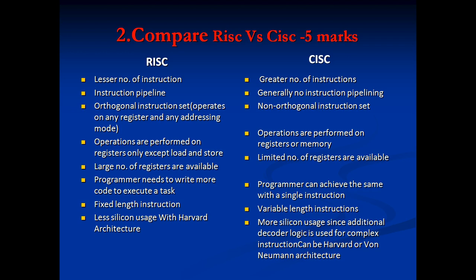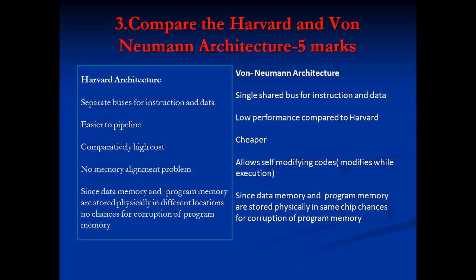In RISC, programmers need to write more code to execute a task. In CISC, due to the large number of instructions, a programmer can achieve the same with a single instruction. RISC has fixed-length instructions; CISC has variable-length instructions. RISC uses less silicon with Harvard architecture; CISC uses more silicon since additional decoder logic is used, and can use Harvard or Von Neumann architecture.